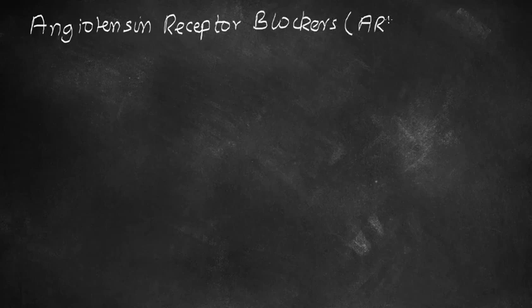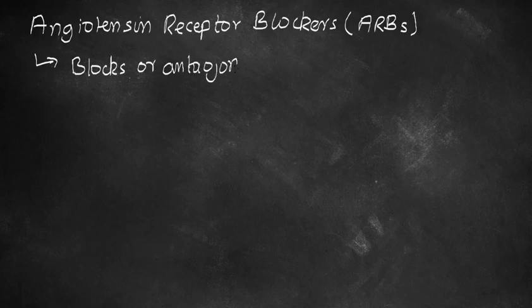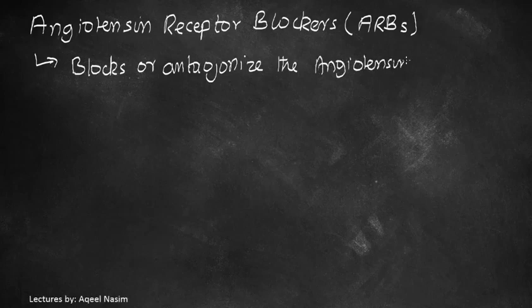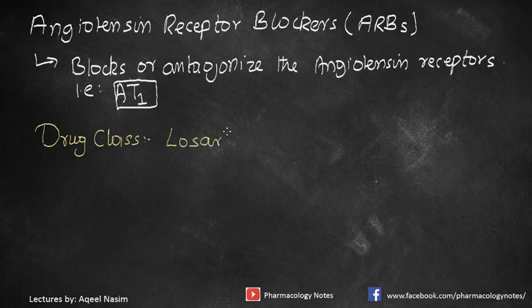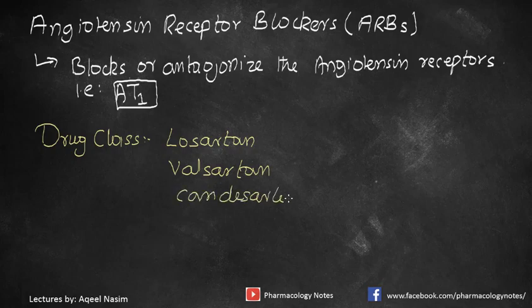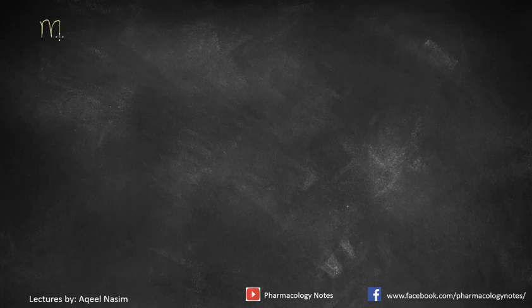In this video we are going to discuss the next group of drugs in cardiovascular pharmacology: angiotensin receptor blockers, commonly known as ARBs, an important class in the renin-angiotensin system. Angiotensin receptor blockers are drugs that block or antagonize the angiotensin receptor. They act particularly upon angiotensin 1 receptors, abbreviated as AT1. The drug class includes the suffix '-sartan', so losartan, valsartan, candesartan, etc. are included in the ARBs.